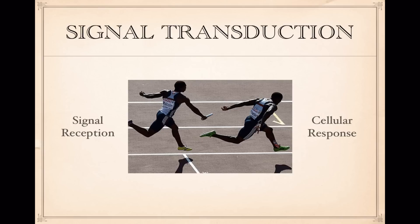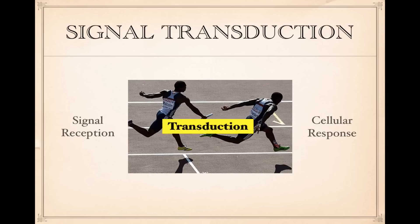Signal transduction is the step between the reception of a signal, usually from the outside of a cell, and the cell's response to that signal. You can think of signal transduction as the go-between, kind of like in a relay race where relay racers are passing a baton from runner to runner. It's a very important step, and it's a step where lots of regulation can take place — where cells can control what they're going to do based on the signals they're receiving and the responses they're going to produce.